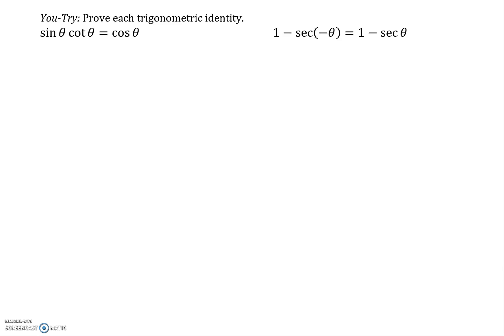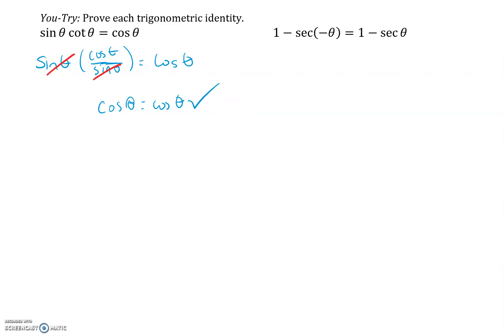Let's go over these "you try" problems. The first one — sine theta times cotangent theta equals cosine theta — is pretty straightforward, because cotangent theta is cosine over sine. So I can rewrite cotangent theta as cosine theta over sine theta, and then that sine theta cancels the sine theta in the denominator, and we're left with cosine theta equals cosine theta. We've proved that identity — both sides match.